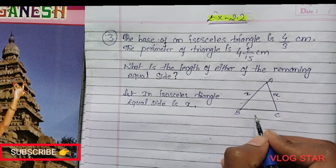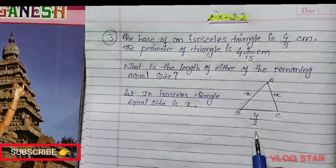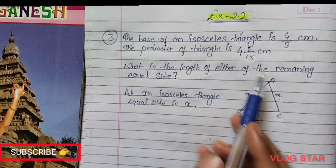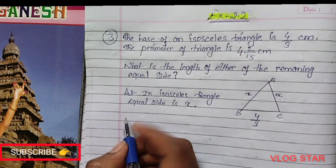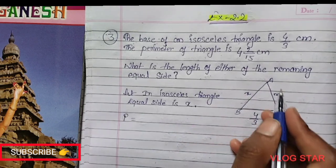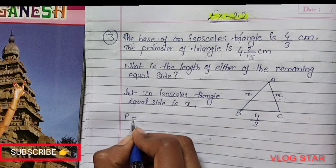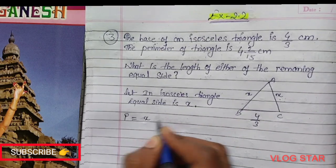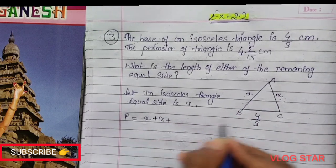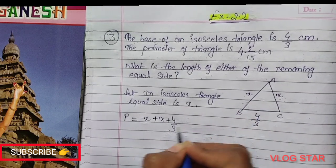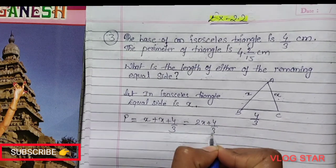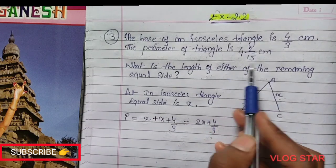The base is given as 4/3. The perimeter of any triangle is the sum of each side. So the perimeter of this triangle is X plus X plus this side, which is 2X plus 4/3, which is given as 4 and 2/5.